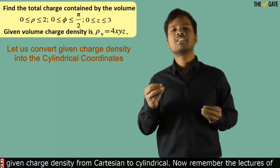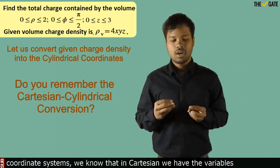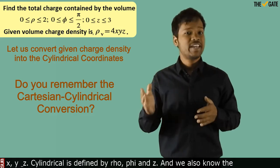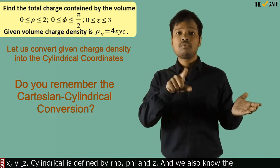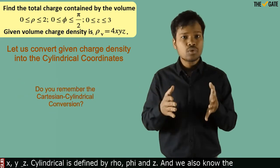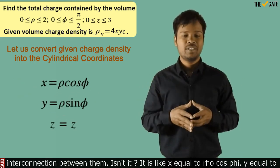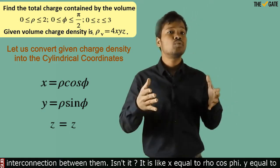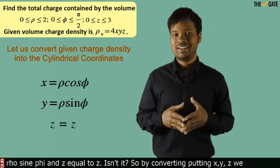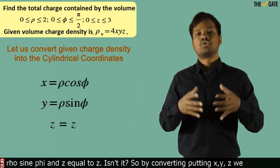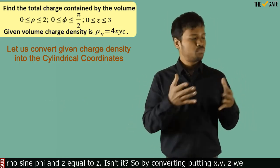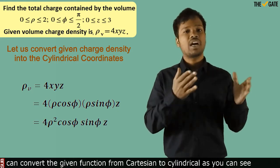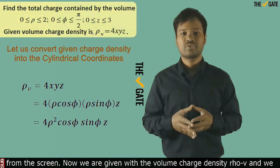So by the simpler way, let us convert the given charge density from Cartesian to cylindrical. Remember the lectures on coordinate systems — in Cartesian we have variables x, y, and z; cylindrical is defined by ρ, φ, and z. The interconnection between them is: x = ρ cos φ, y = ρ sin φ, and z = z. By substituting these, we can convert the given function from Cartesian to cylindrical, as you can see from your screen.